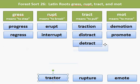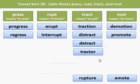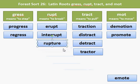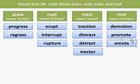Tractor includes the root tract, which means to pull. A tractor is something that pulls other implements in a field. Rupture includes the root rupt, which means to break. If something ruptures, it breaks apart or breaks open. And finally, our last word sample is emote. To emote is to move emotion out of you — such as an actor might emote a certain emotion. You might send an emoji out to someone; that is another way to move your feelings out to others, to emote.